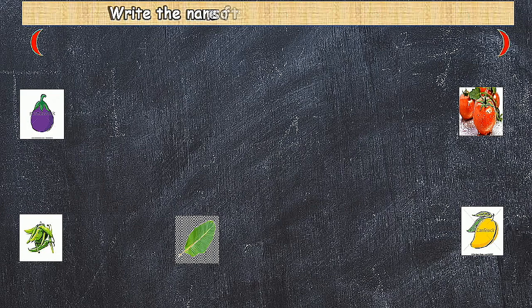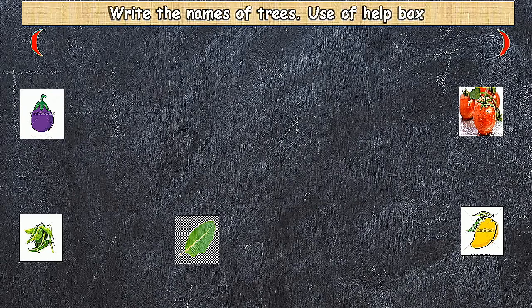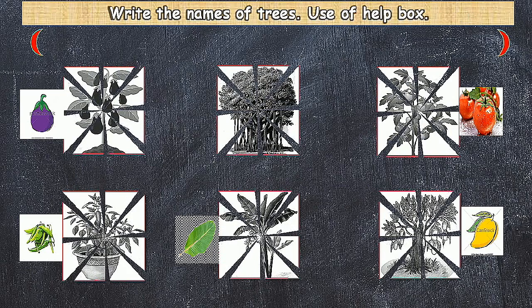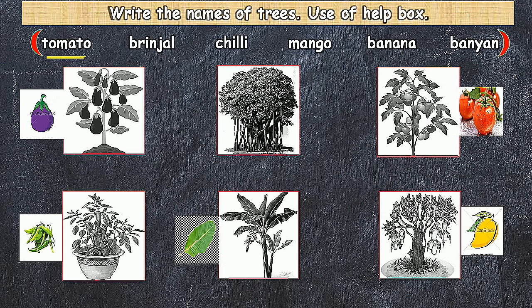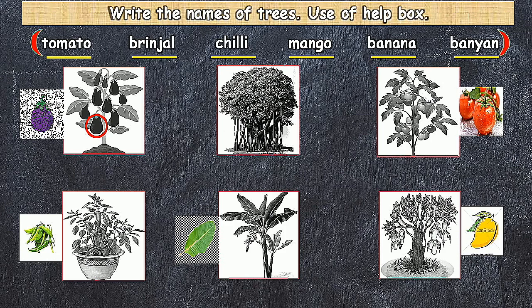Next activity: write the names of trees. The trees shown are tomato, brinjal, chili, mango, and banana.